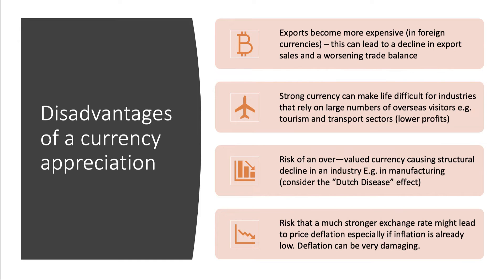A strong currency can also make life difficult for particular sectors that rely on large numbers of overseas visitors — for example, hotels, tourism, theme parks, and transport sectors. Profits from those industries can go down because there are fewer overseas visitors.